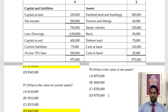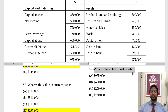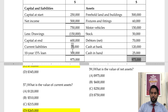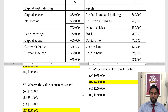What is the value of net assets? Net assets is total assets minus total liabilities, or simply capital. One way is to look at capital at end — that's 600,000. We can double check: total assets are 975,000 and total liabilities are 75 plus 300, which is 375,000. Take 375 away from 975 and you get 600,000. Confirmed.